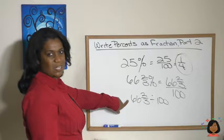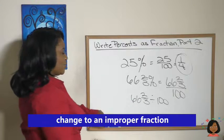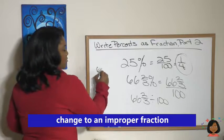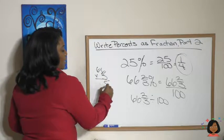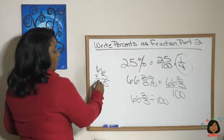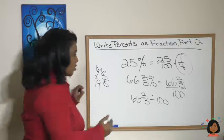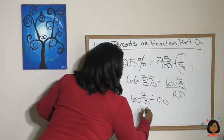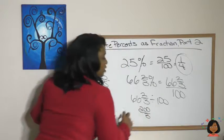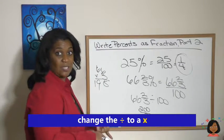Because you know what to do there. Let's take this mixed number and turn it into an improper fraction. 66 times 3 is 198, so we're gonna do 198 plus 2, which is gonna be 200 over 3.